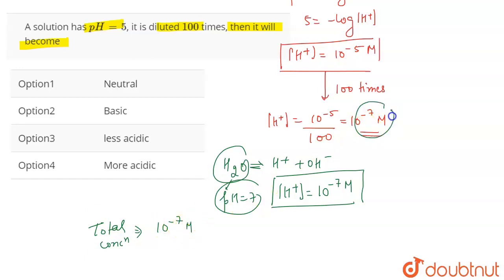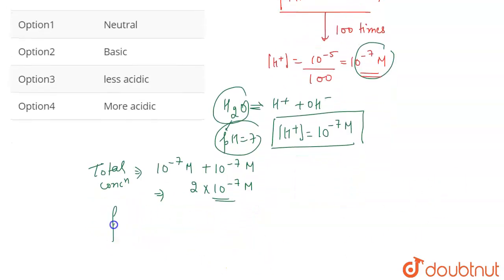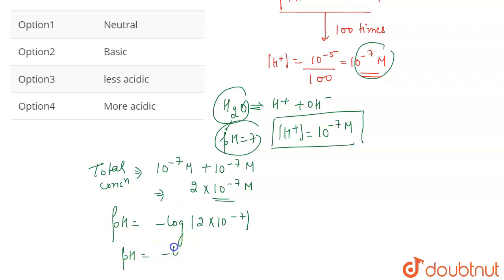Therefore, the total concentration of H⁺ will be the H⁺ concentration after dilution plus the H⁺ concentration due to water in which it is diluted. This becomes 2×10⁻⁷ molar. Now we find the pH of the solution: pH = -log(2×10⁻⁷).